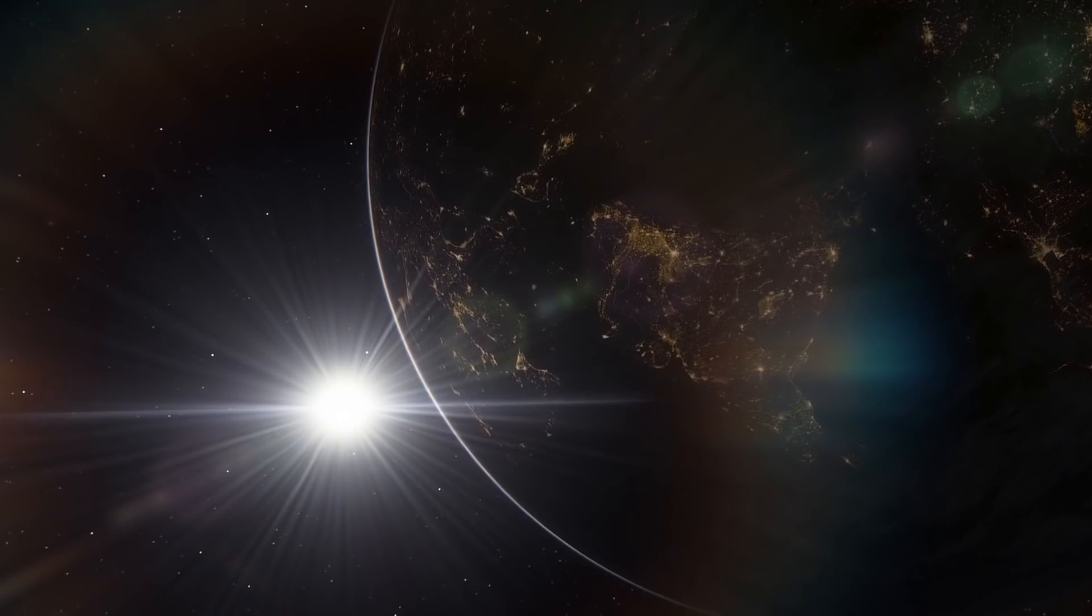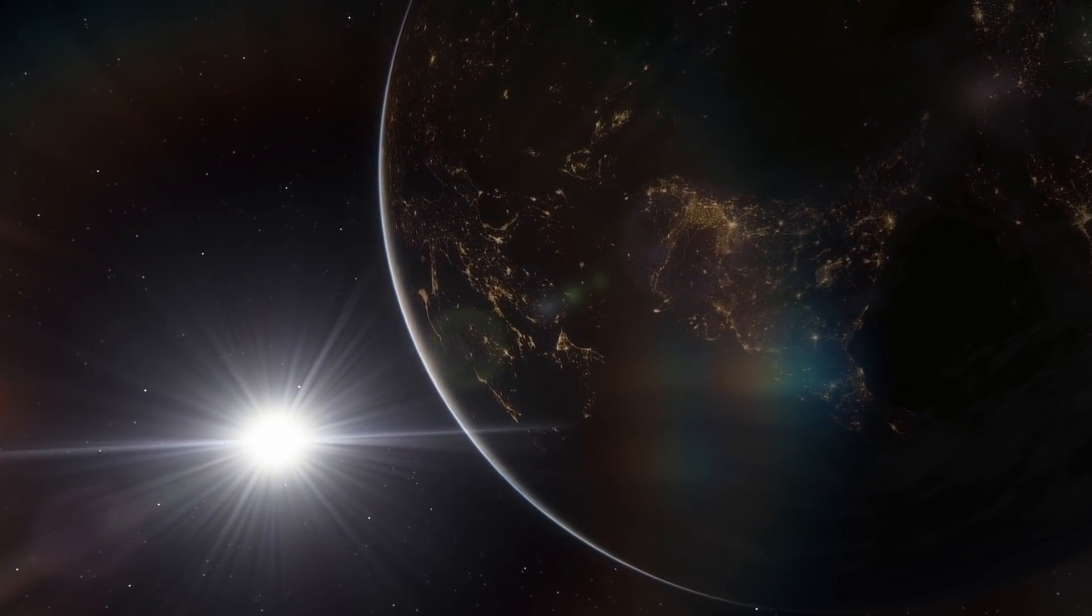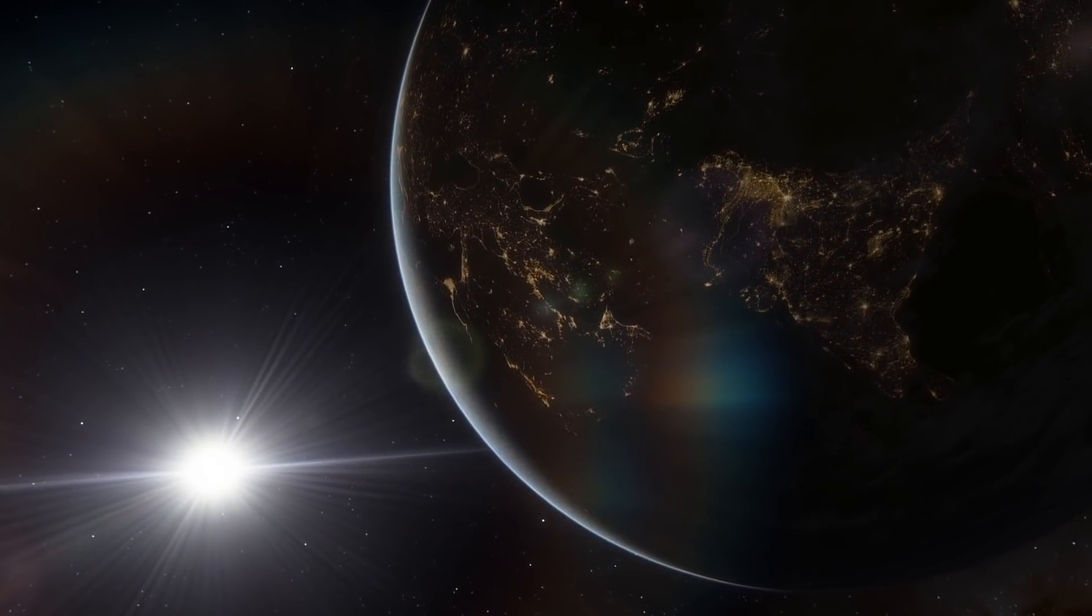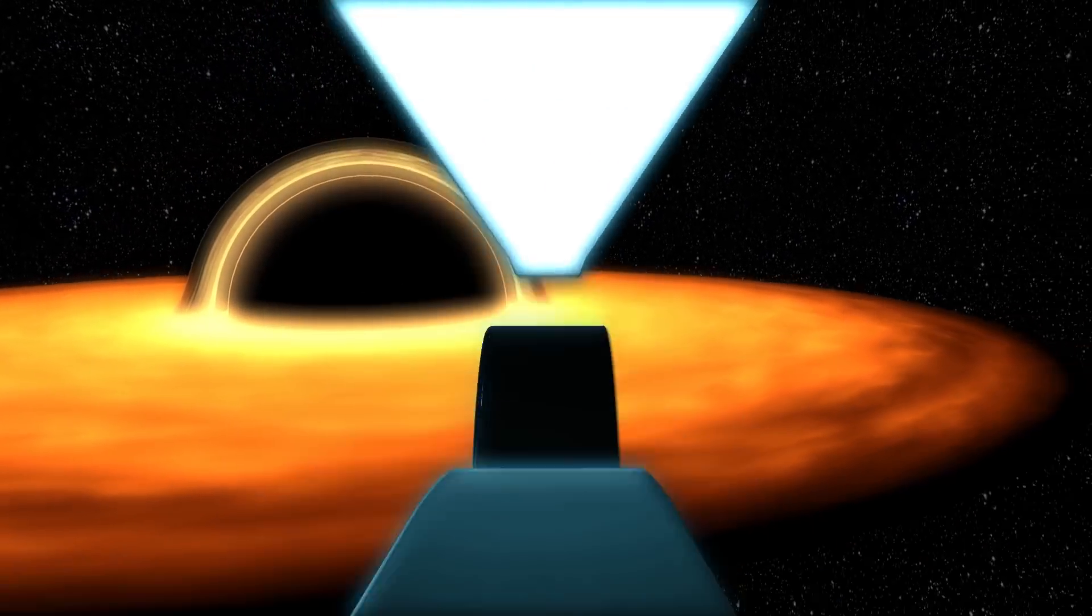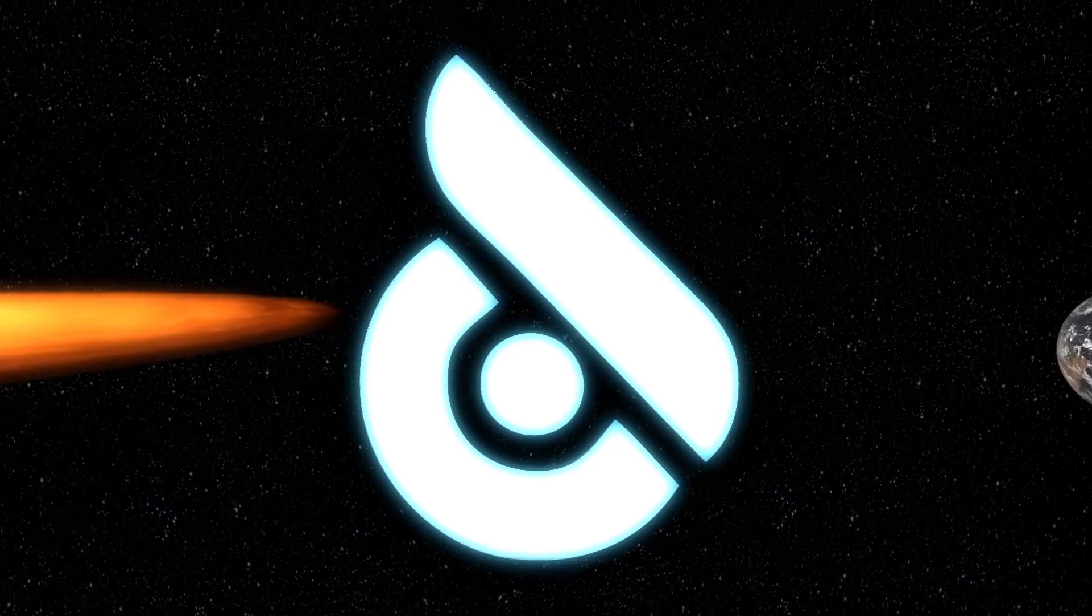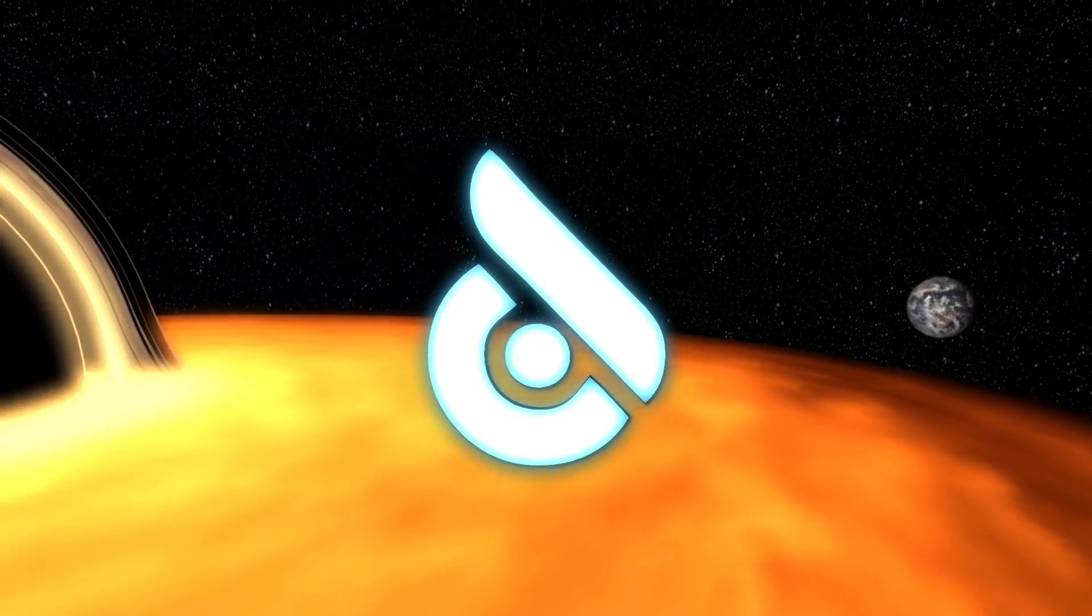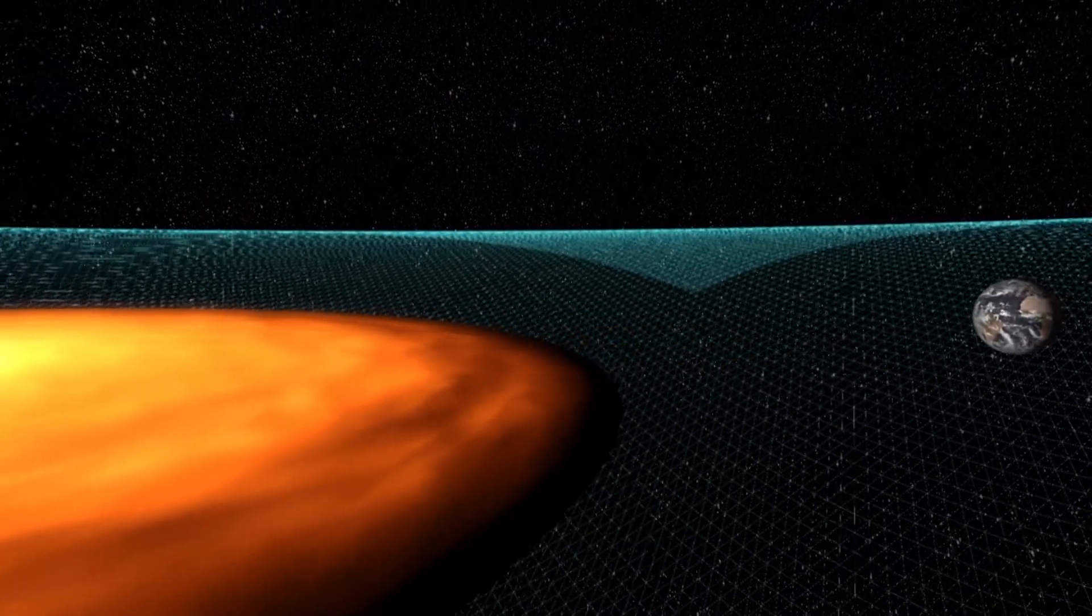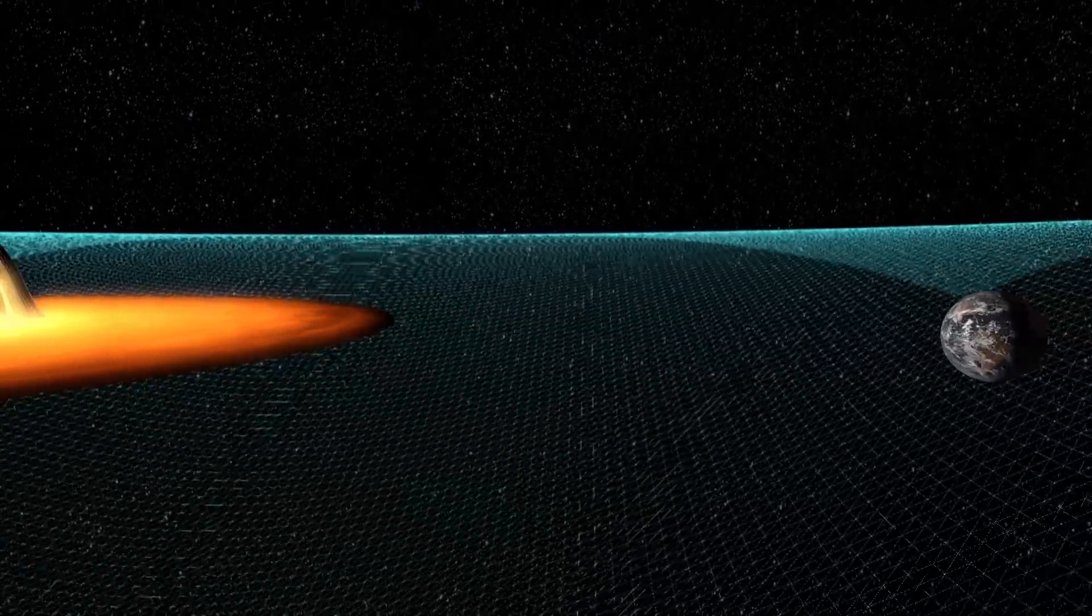We're extremely lucky to have been born so far from TON 618. But what if things were different? What if a similar black hole somehow appeared near our planet? Due to super-strong gravitational influence, the black hole would begin attracting the Earth towards it.